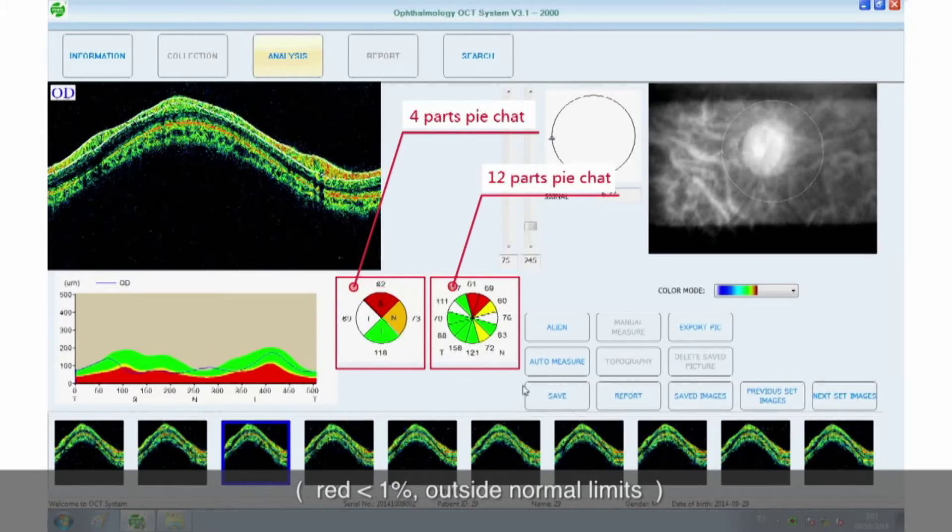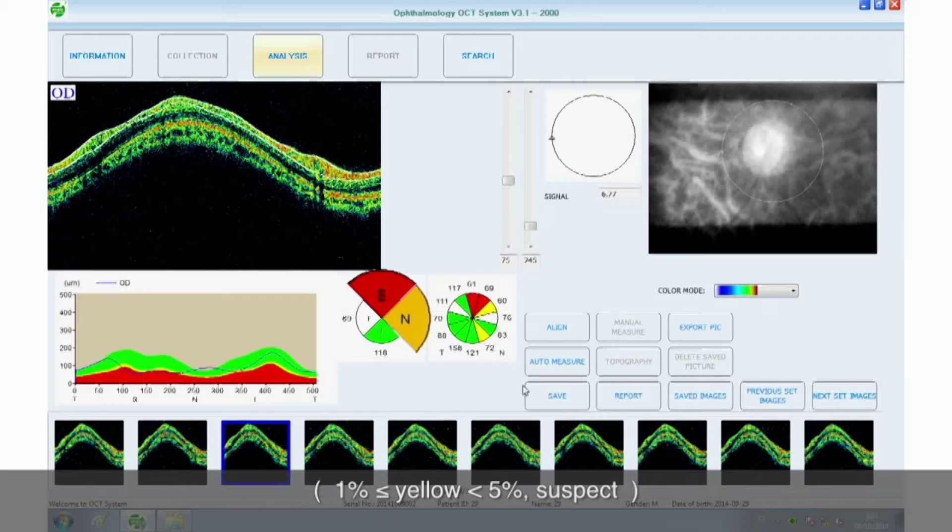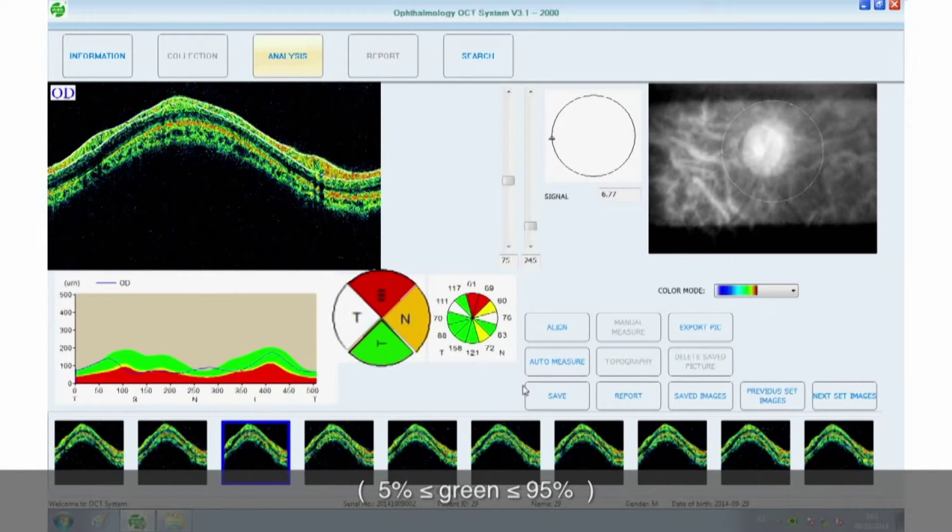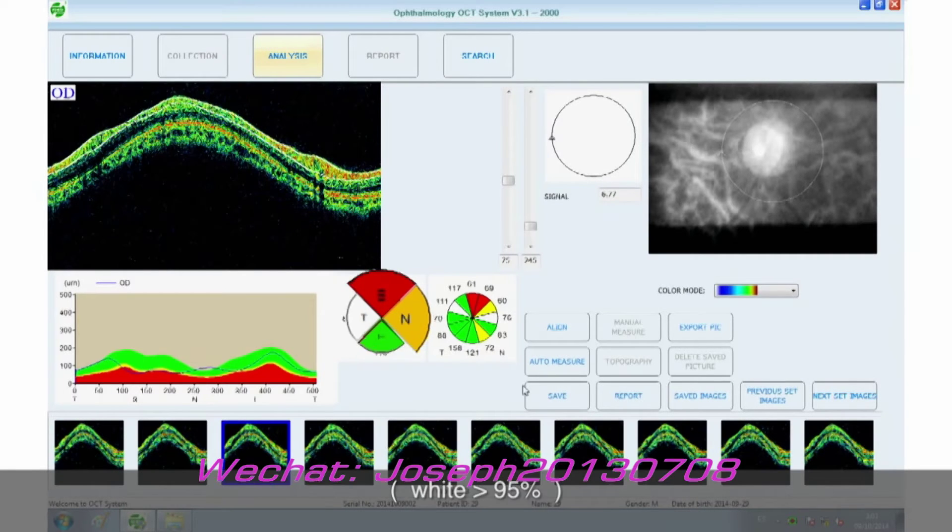The thinnest 1% of measurements fall in the red area. Measurements in red are considered outside normal limits. Red less than 1% outside normal limits. The thinnest 5% of measurements fall in the yellow area or below. 1% less than or equal to yellow, less than 5% suspect. 90% of measurements fall in the green area. 5% greater than or equal to green, equal to or less than 95%. The thickest 5% of measurements fall in the white area. White greater than 95%.